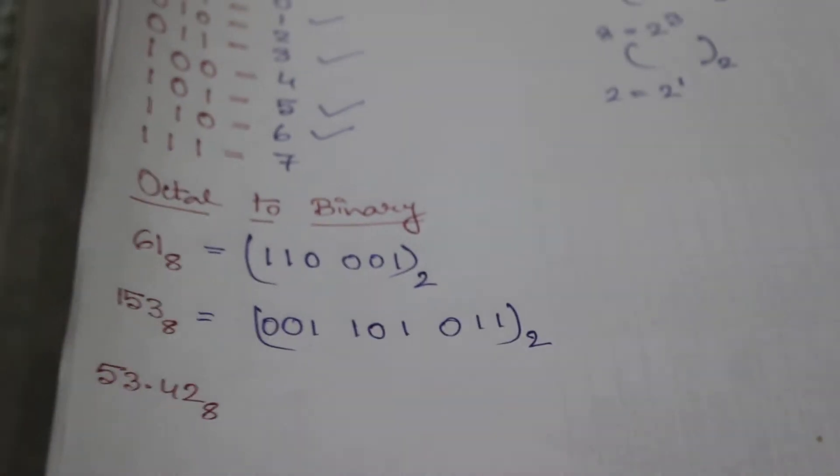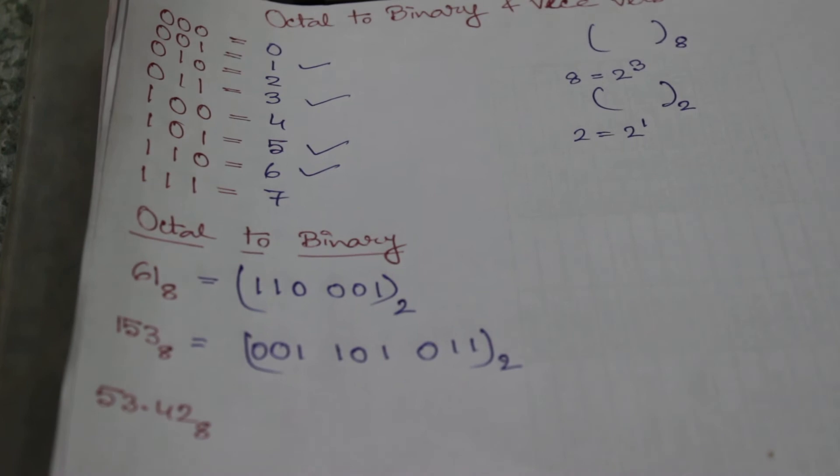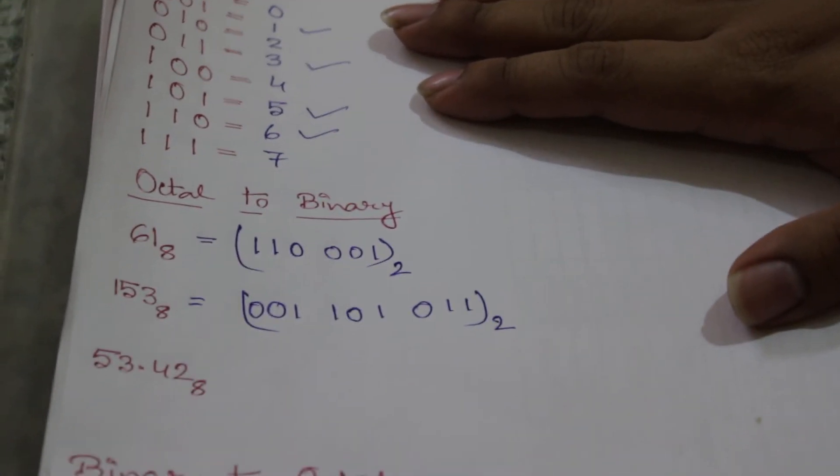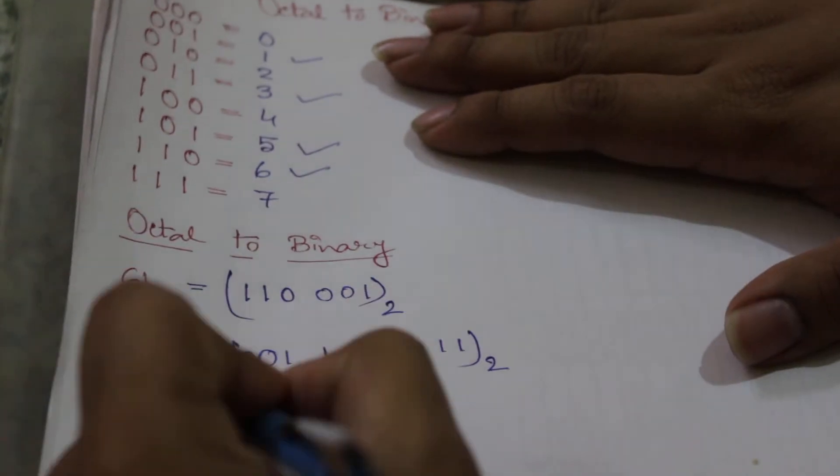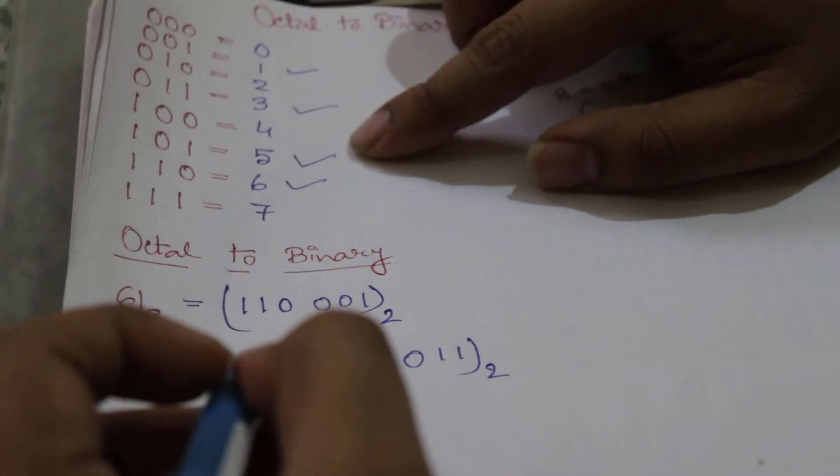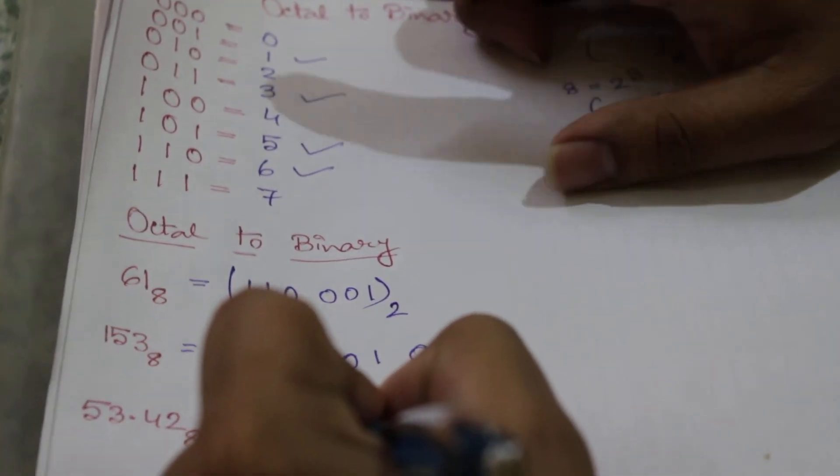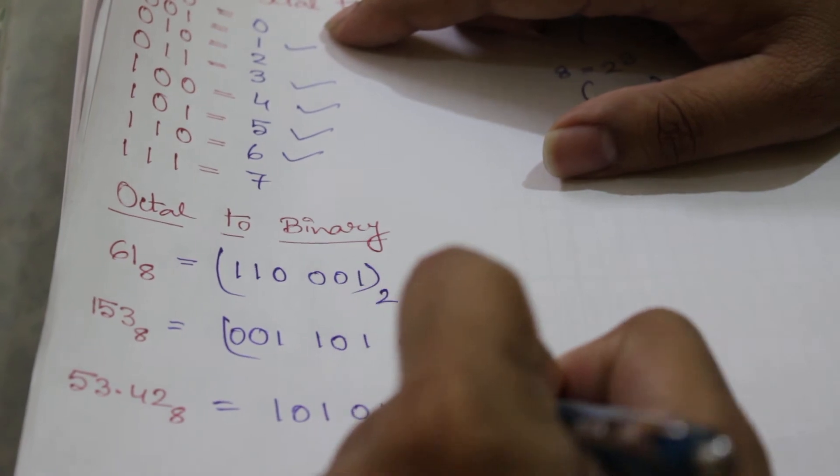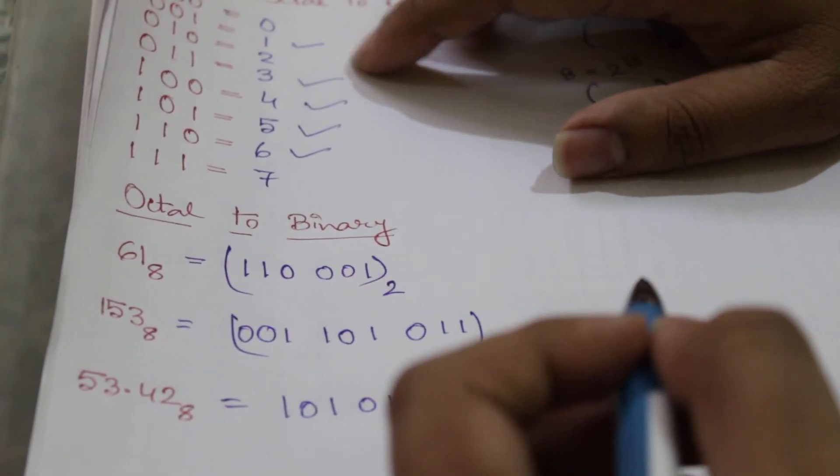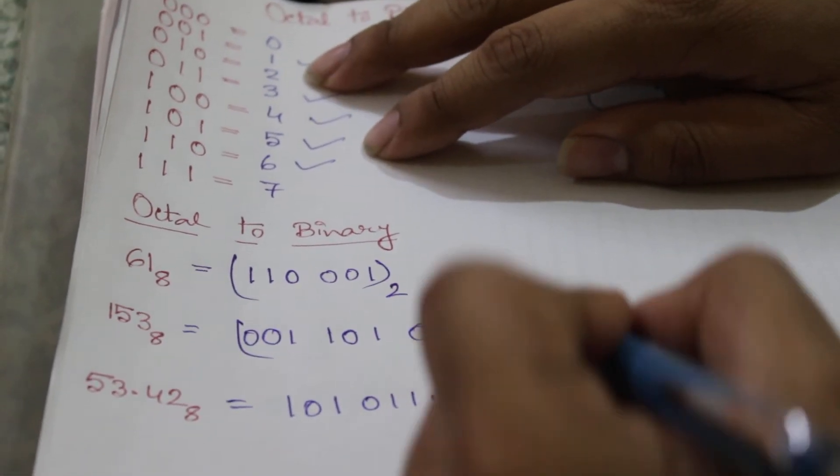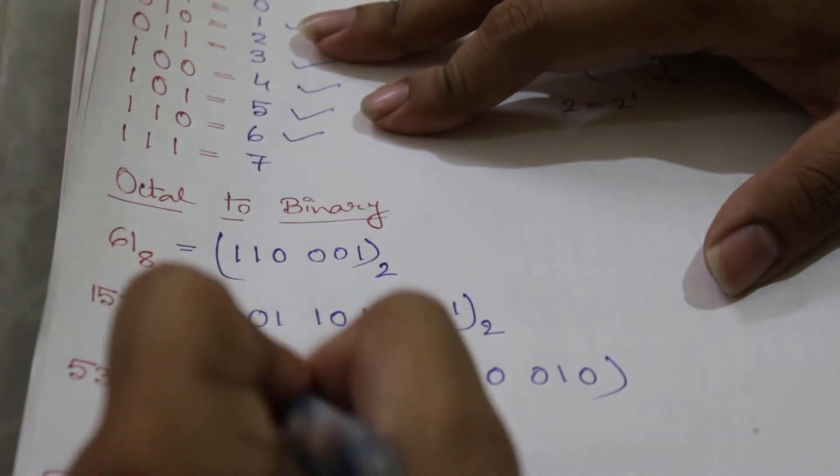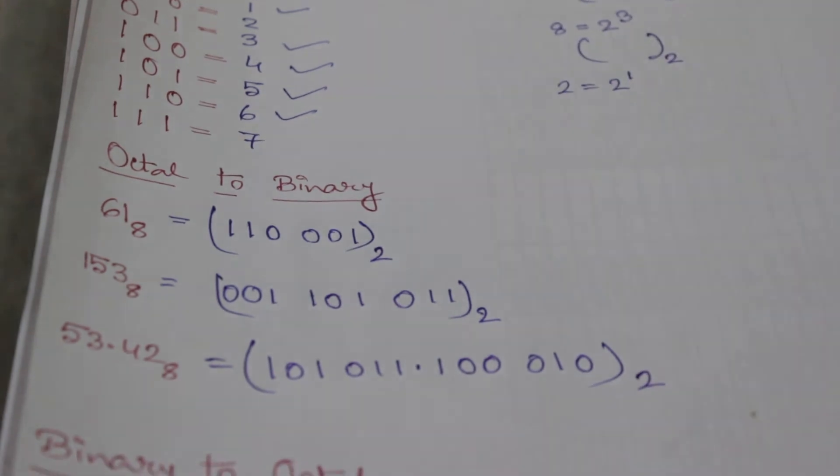Let's have an example with a fraction part, that is 53.42. We have to convert it into a binary number. So five is this one zero one, three is this zero one one, four is this one one zero zero, and two is this zero one zero. So this will be its binary equivalent.